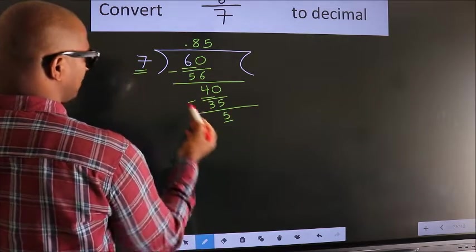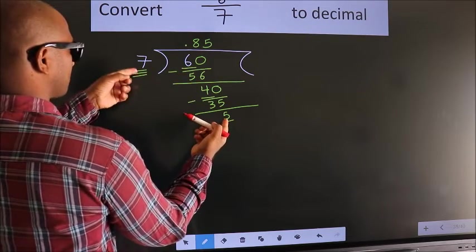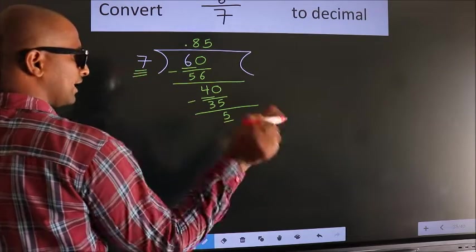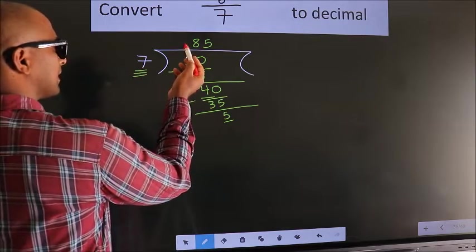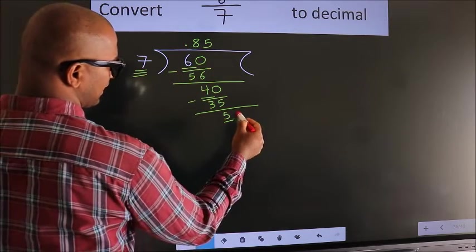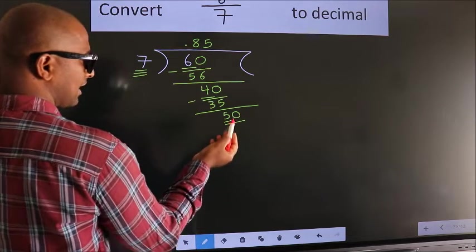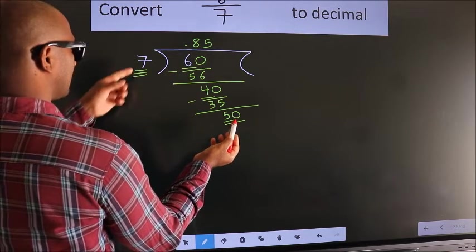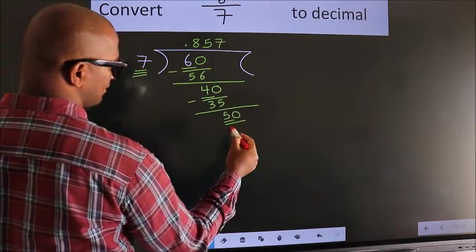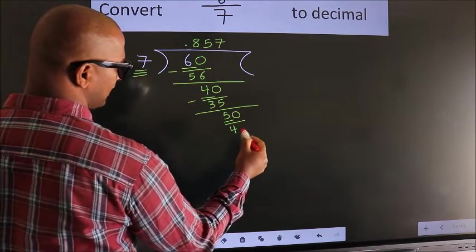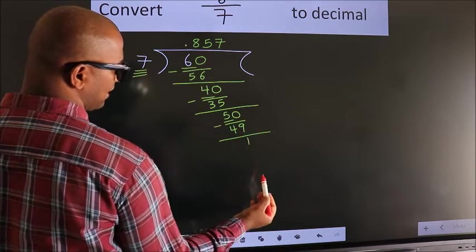Here we have 5, here 7. 5 is smaller than 7. And we already have the decimal, so we can directly take 0. So 50. A number close to 50 in the 7 table is 7 sevens, 49. Now we subtract. We get 1.